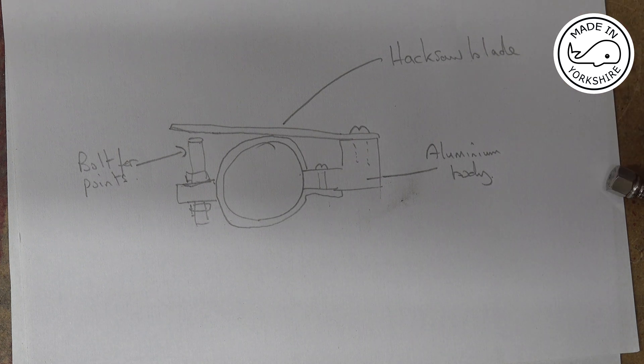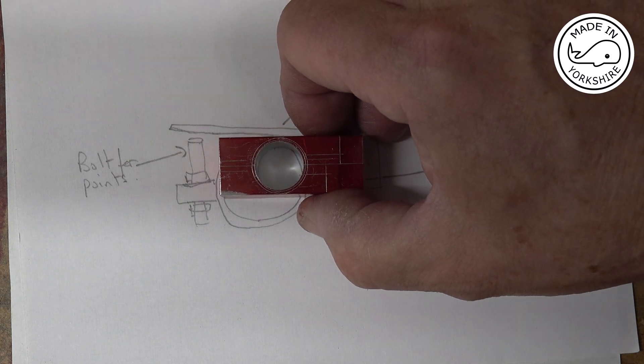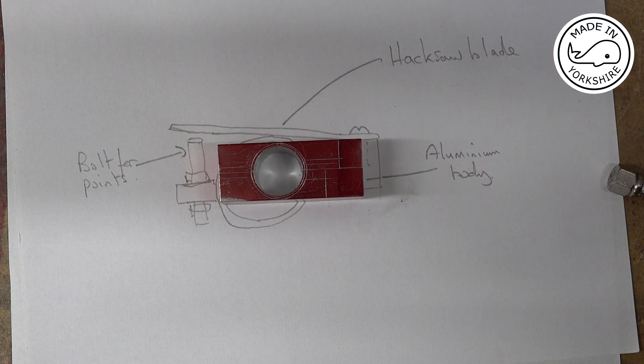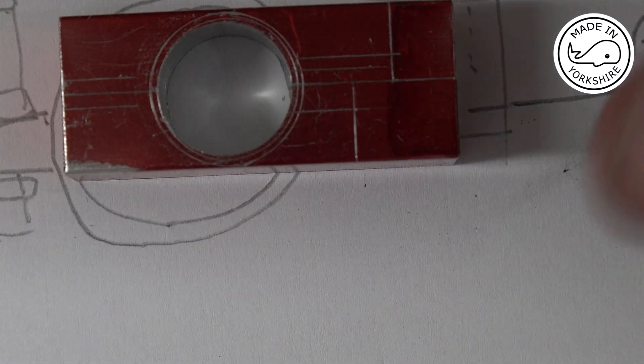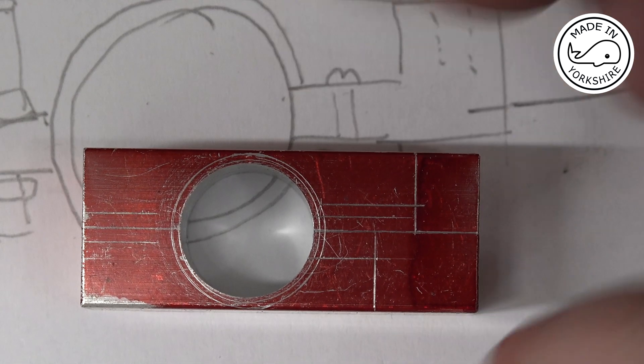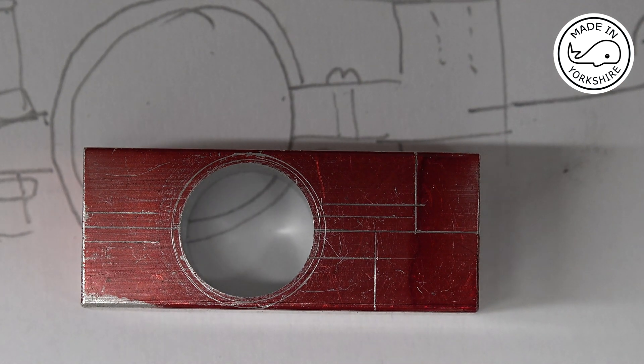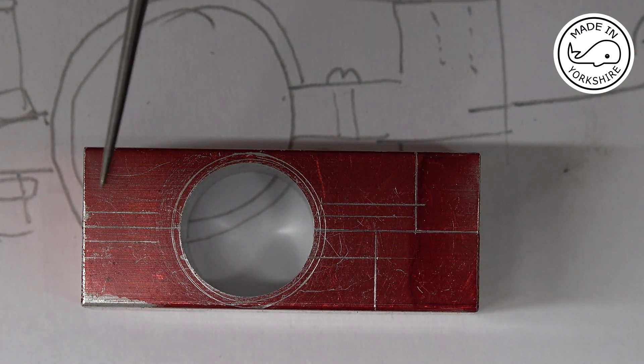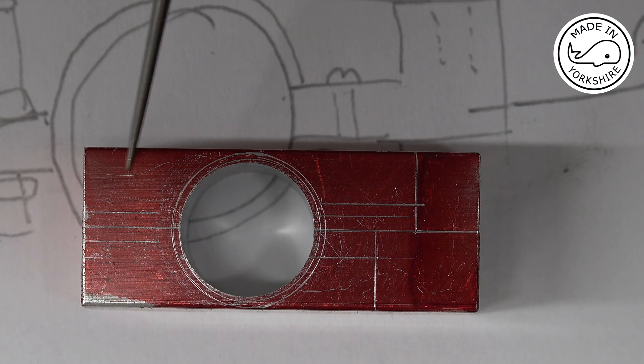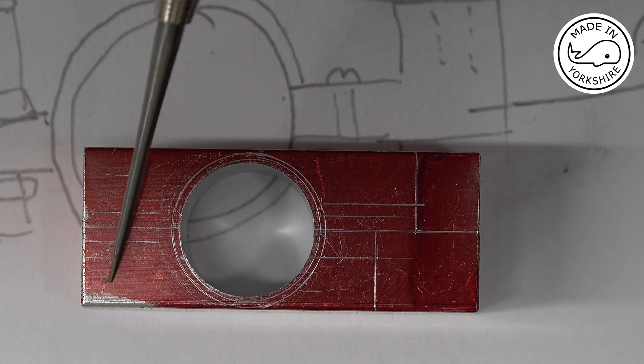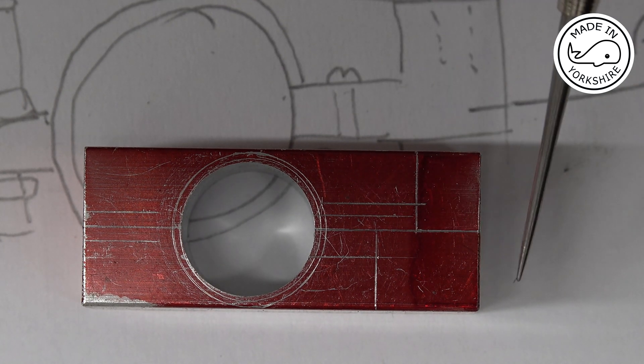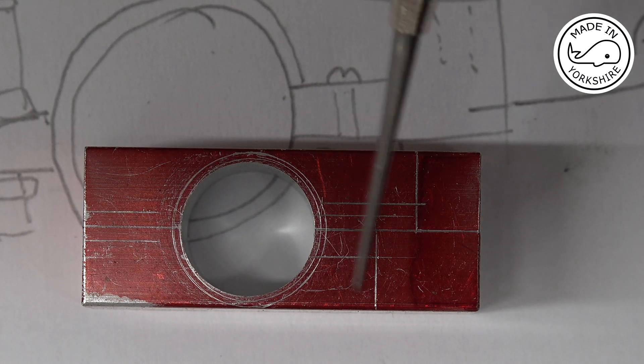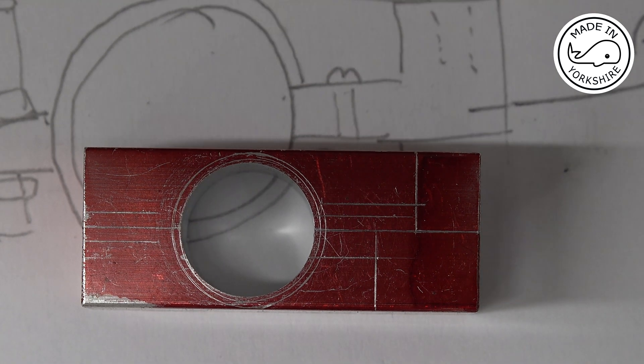So what I'm going to do first of all is have a go at making the body. Now I've already drilled a hole in this piece of aluminum and marked it up. So what I need to do is remove this area here, this area here, that area and this, and then cut through there. So that's the plan.